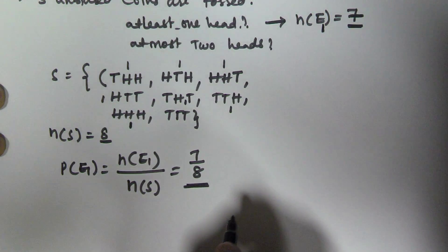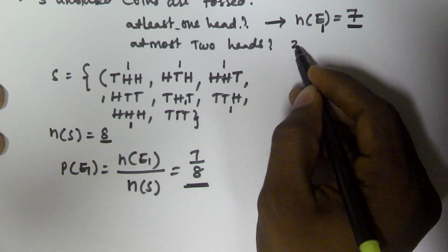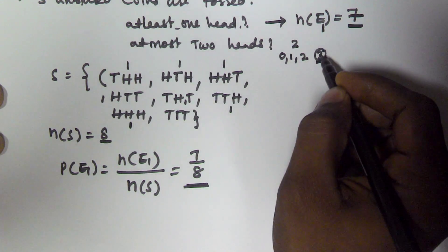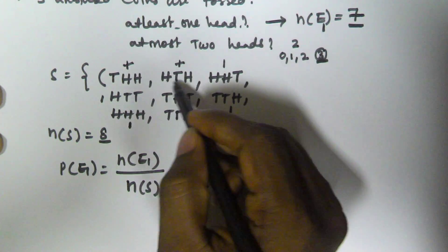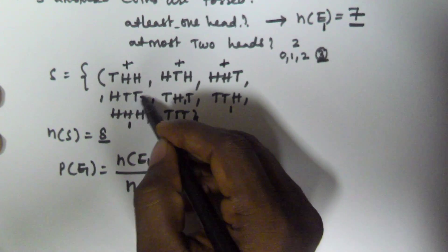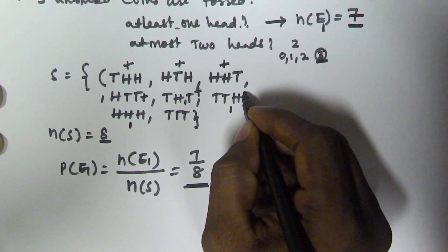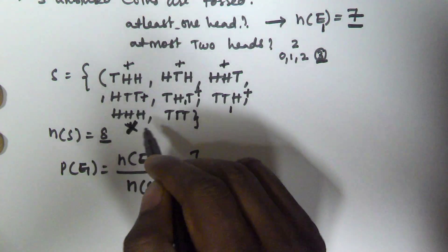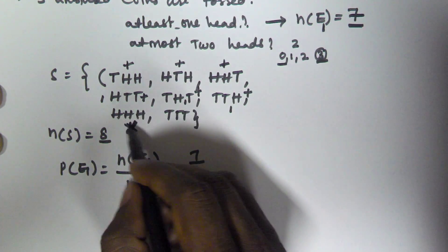So the probability of getting at least one head is 7/8. Now we have to find at most two heads. The outcome may contain zero heads, one head, or two heads, but it cannot contain three heads because at most it may contain two heads. So the outcome with three heads is excluded.